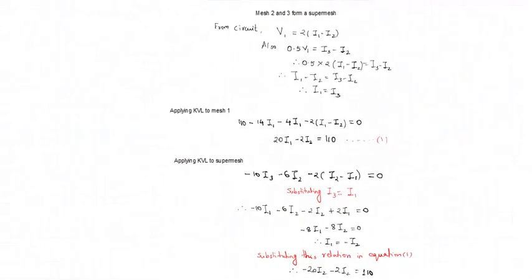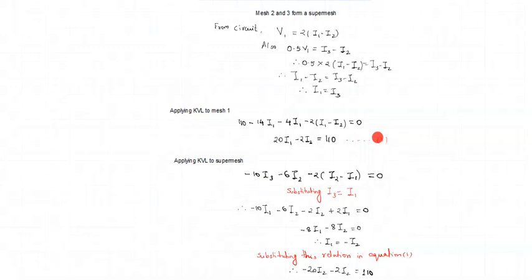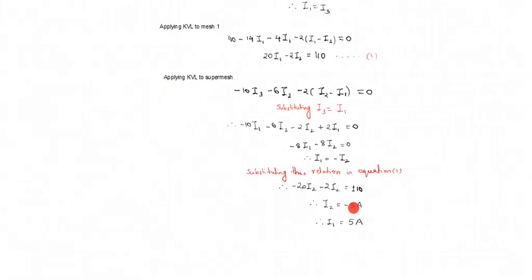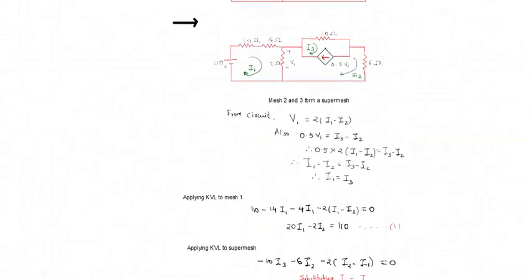Substituting i1 = −i2 into equation one, we get an equation with only i2. Solving gives i2 = −5 amperes, and therefore i1 = −(−5) = 5 amperes. This is how KVL is applied to a super mesh. The concept of super mesh is clear: it is formed by combining the meshes where the current source is common between two adjacent loops.